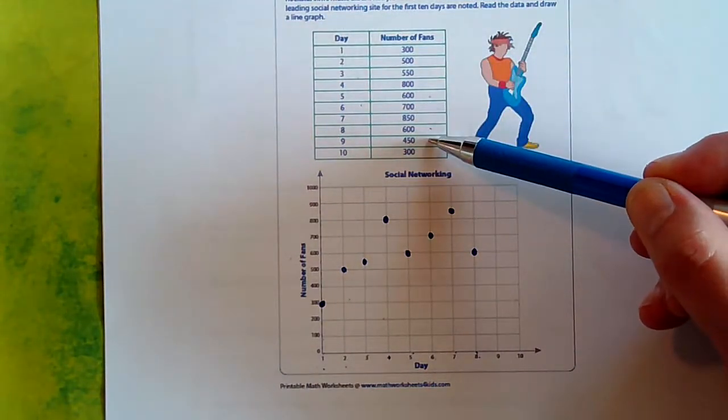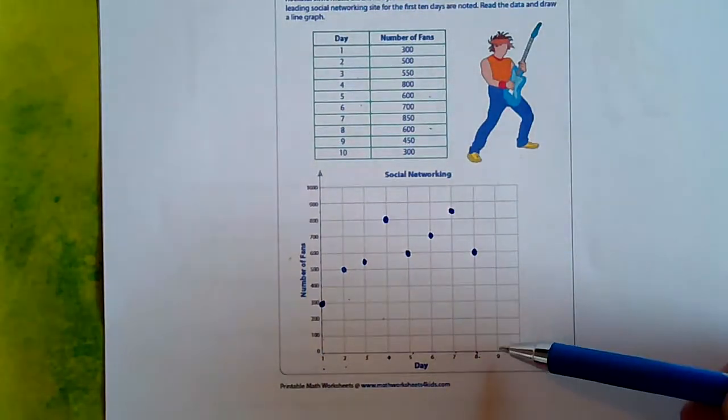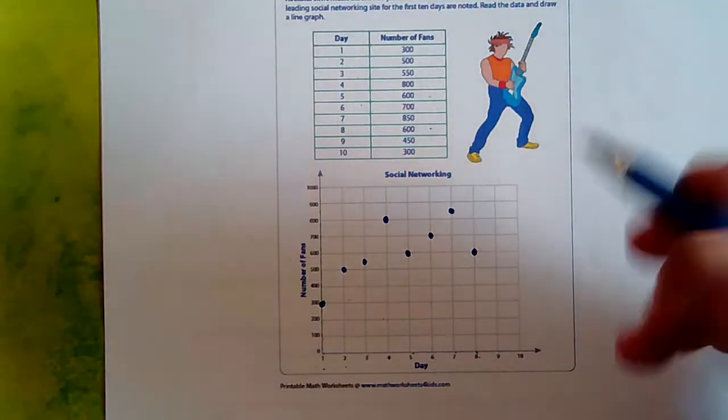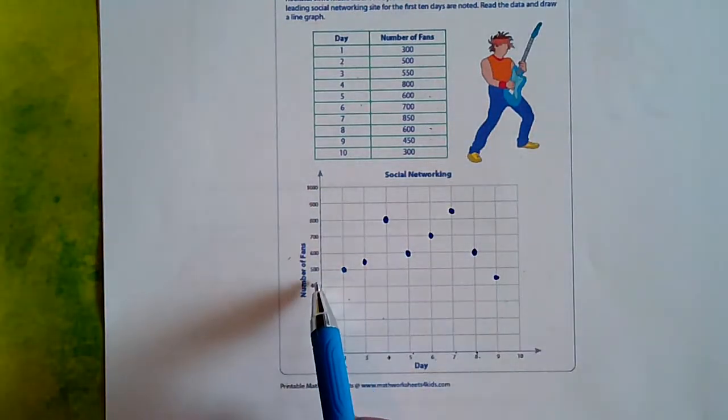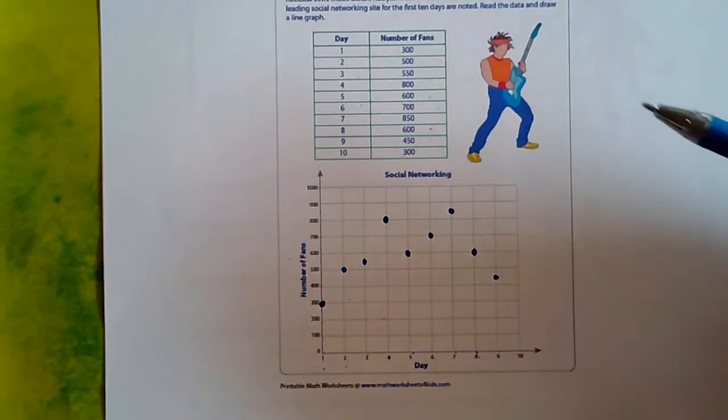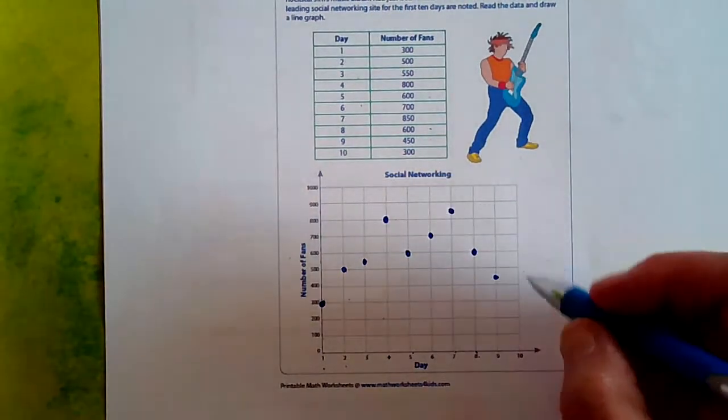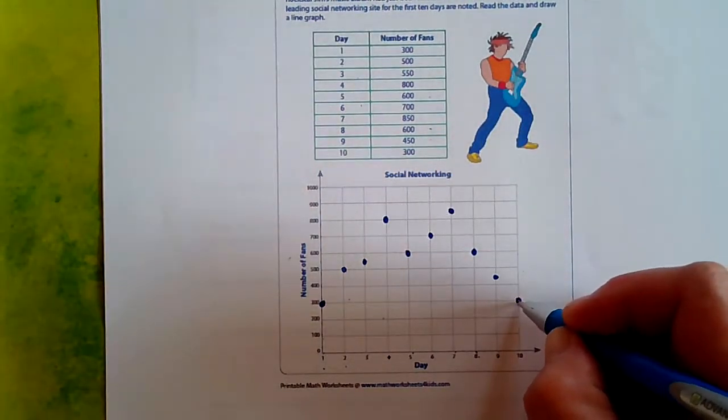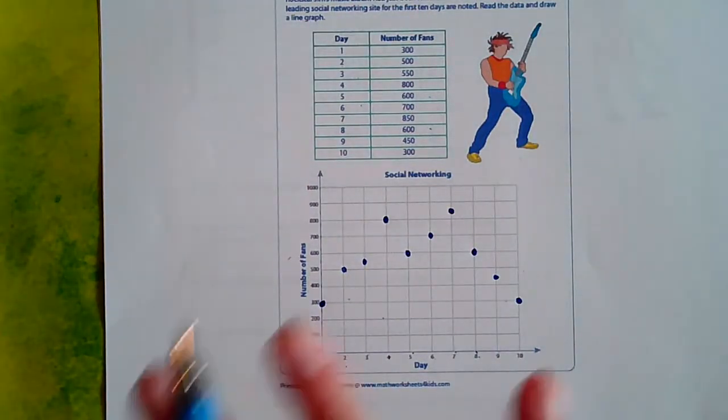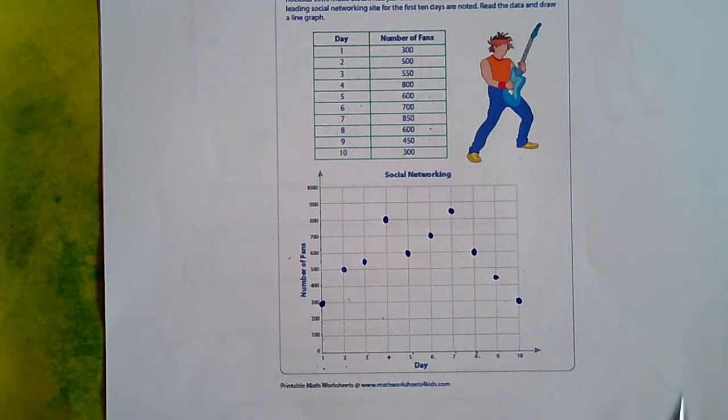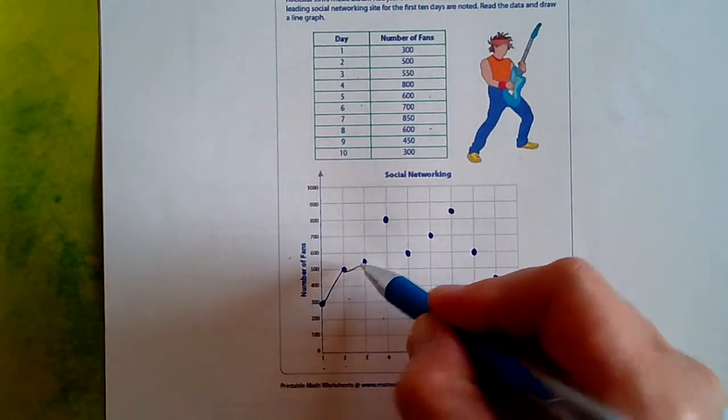On day nine, old Big Jim, he drops a little bit more. Okay. So on day nine, he had 450 fans, which is right in between 400 and 500 over here. And then on day 10, old Jim was back where he started from. He had 300 fans, just like he did when he started out. Okay. So we have plotted all of our points from our data chart up here. Now we're just going to draw a line and connect those.